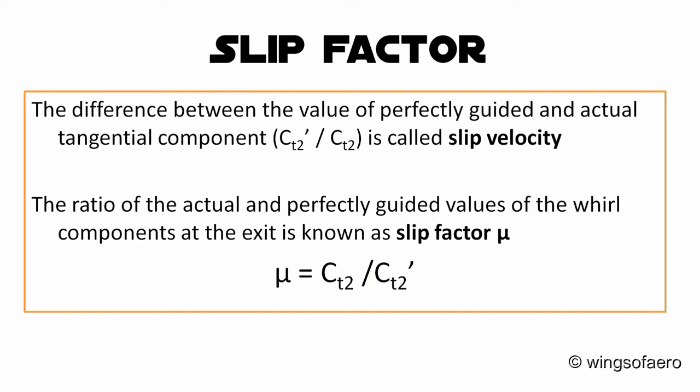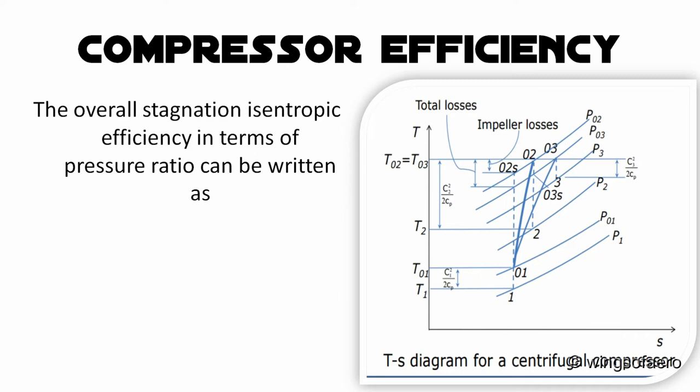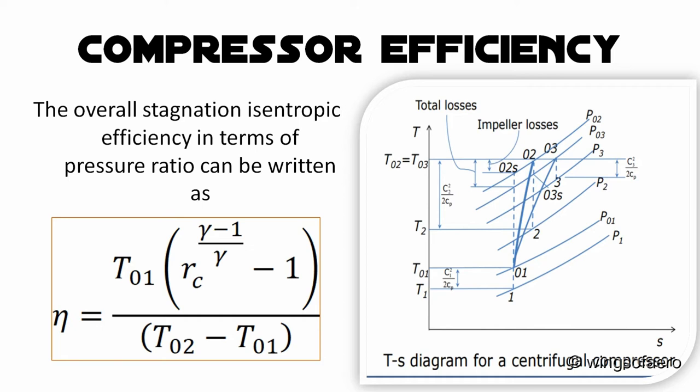The overall stagnation isentropic efficiency in terms of pressure ratio can be expressed as: ηc = T01·[(Rc^((γ−1)/γ)) − 1] / (T02 − T01).